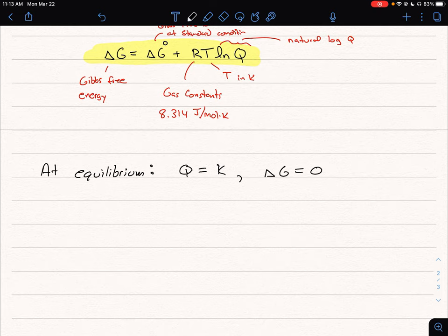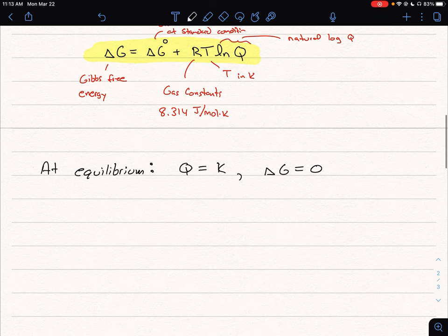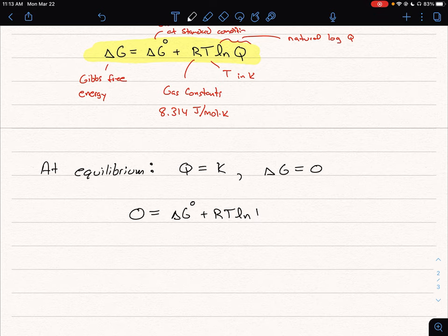So if we take that reaction from above and substitute in we now know zero equals delta G naught plus RT ln of now K.